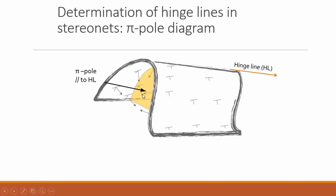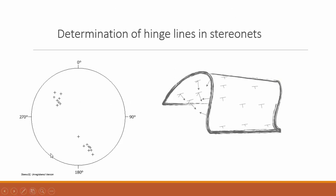This surface has a normal direction to it, and the normal direction onto this plane is called the pi pole. This pi pole is parallel to the hinge line of a cylindrical fold. When we plot field data onto a stereo net, a fold with two differently oriented limbs produces two clusters, each representing one limb. One limb dipping to the southeast has corresponding great circles over here, and the other limb dipping to the northwest has great circles somewhere over here.